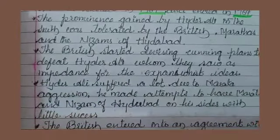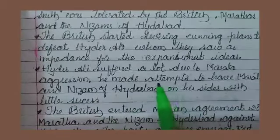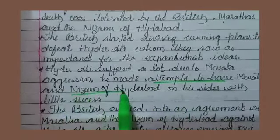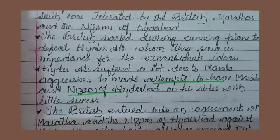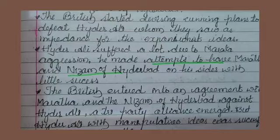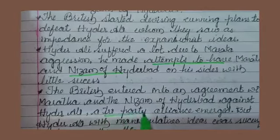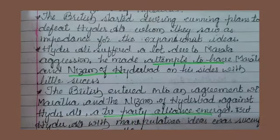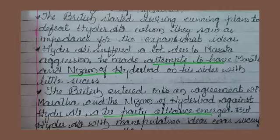Hyder Ali suffered due to Maratha aggression and attempted to bring the Marathas and Nizams of Hyderabad to his side, with little success. The British entered an agreement with the Marathas and Nizams of Hyderabad against Hyder Ali — a tri-party alliance. However, Hyder Ali successfully manipulated the Nizams and broke down the alliance.